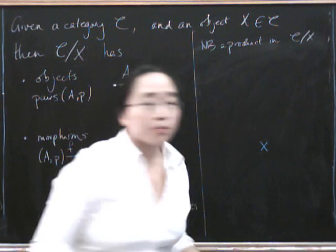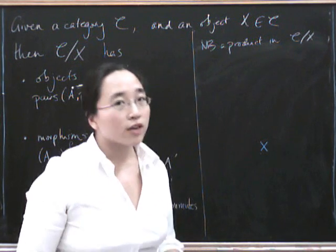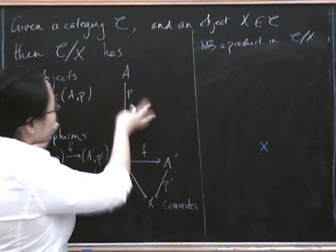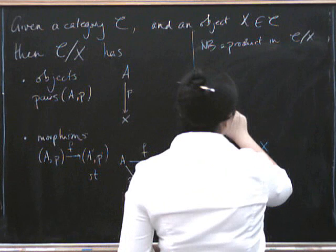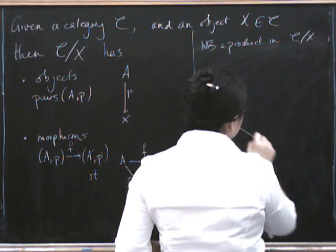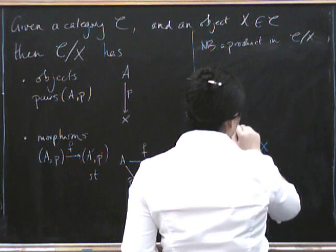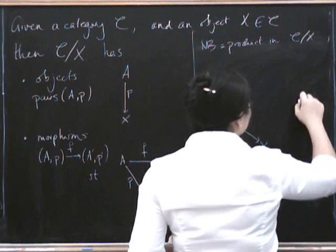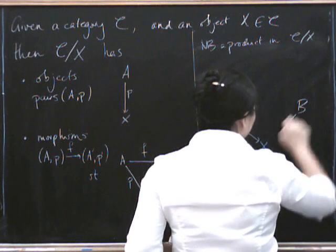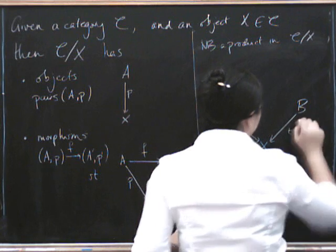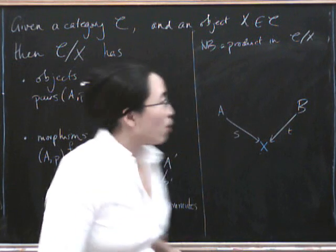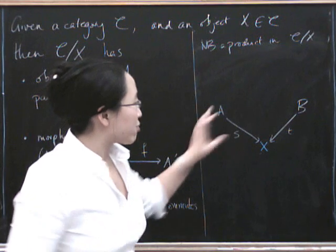Now, what do we take products of? Or rather, of what do we take products? We take them of two objects in our category. So let's put up two objects in our category. Here's A with a map going down to here, which I'll call P. And here's, and that's a terrible letter for it, S. And B with a map going down to it, which I'll call T. Is this beginning to look familiar? What do you think could possibly happen when I take a product of this?